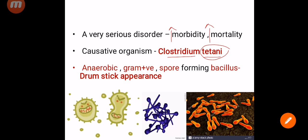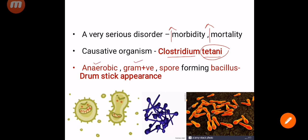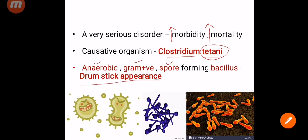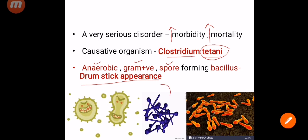The specific characteristics of this organism are that it is anaerobic, gram-positive, spore-forming bacillus. And it has a characteristic drumstick-like appearance. This is very important because it's a specific characteristic feature of Clostridium Tetani. You can appreciate that in the picture given below.